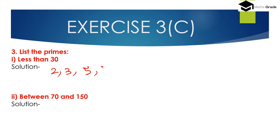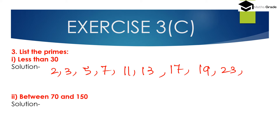So the prime numbers less than 30 are: 2, 3, 5, 7, 11, 13, 17, 19, 23, 29. These are the prime numbers less than 30.